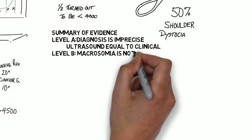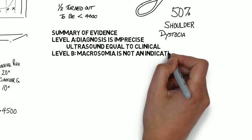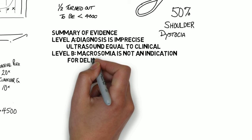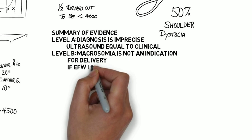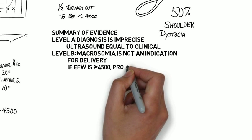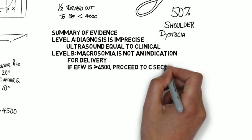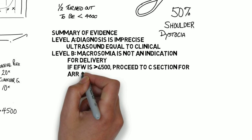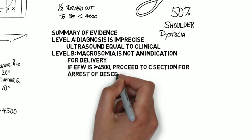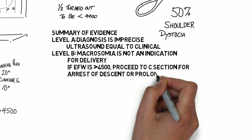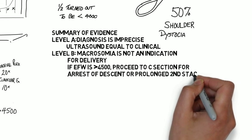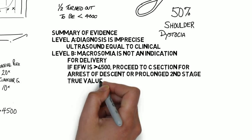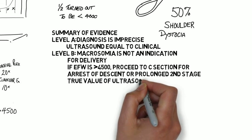Here's the summary. Level A evidence: Diagnosis is imprecise. Ultrasound is equivalent to clinical estimates. Level B: Macrosomia is not an indication for induction. If estimated fetal weight is greater than 4,500, proceed to cesarean section for arrest of descent or prolonged second stage. The true value of ultrasound is ruling out macrosomia.